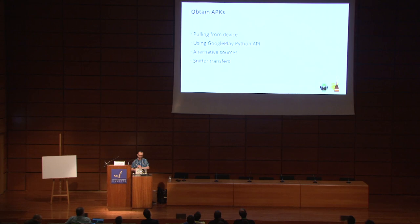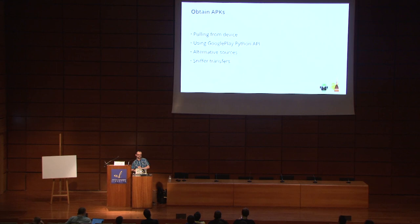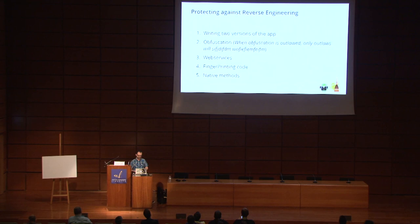I have put here four examples of how to obtain APKs. You can pull it from the device — if the device is rooted, you just connect via ADB, run ADB pull with the APK name, and you have it on your laptop. You can use the Google Play Python API to authenticate and download APKs. There are alternative sources — if you Google 'download APK' you will have a hundred websites. And with a sniffer like Wireshark, you can put it between your device and the Wi-Fi network and capture the APK when it's being downloaded.